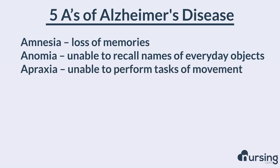The next A is apraxia. It's the inability to perform tasks of movement. So if you ask your patient to wiggle their fingers, raise their hand, or raise their feet, if they have this inability, this may indicate Alzheimer's type dementia.